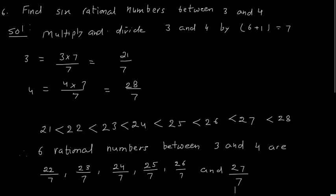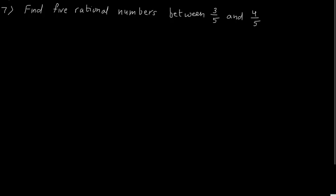Here they haven't asked us to arrange in ascending or descending order. Ascending order means you first write the lowest value and keep increasing. Descending order means you first write the maximum number and then decrease. Find 5 rational numbers between 3 by 5 and 4 by 5. The difference between 3 and 4 is 1, so multiply and divide each fraction by 6, then you can find the 5 rational numbers. I leave this problem for you to solve.